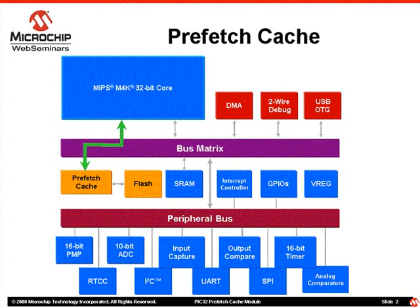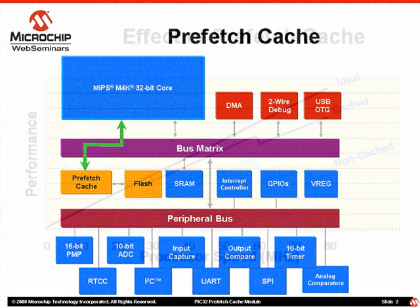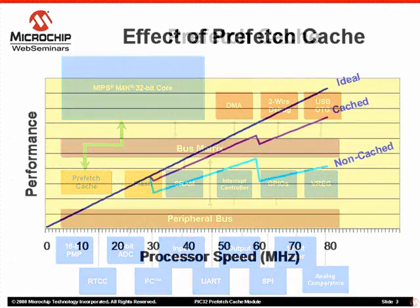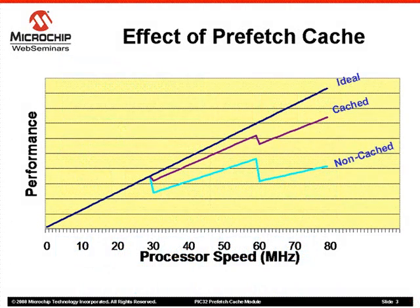This block diagram shows where the Prefetch Cache Module is located in the overall system block diagram. With that brief introduction, let's see why the Prefetch Cache Module is important. This graph shows three different scenarios.